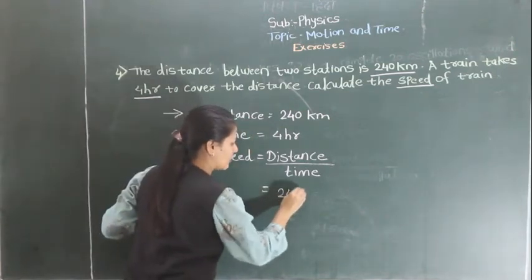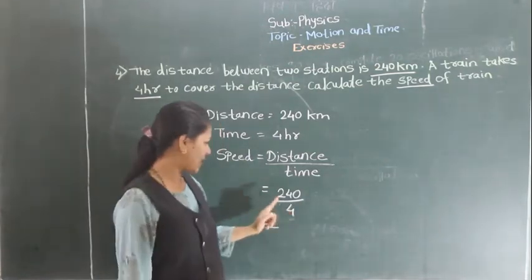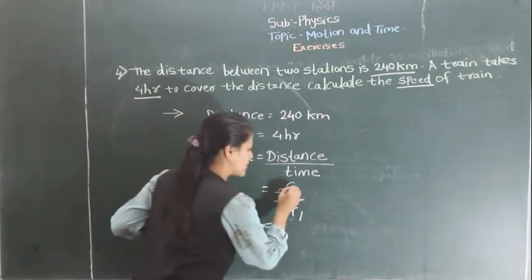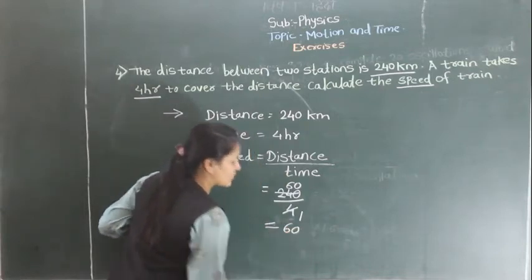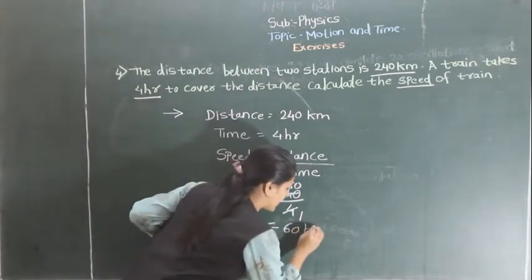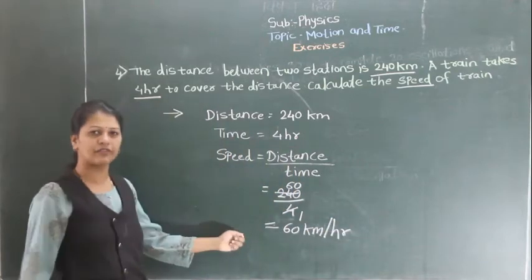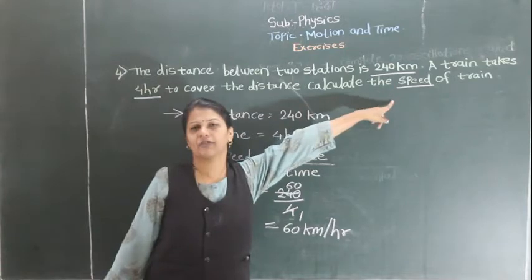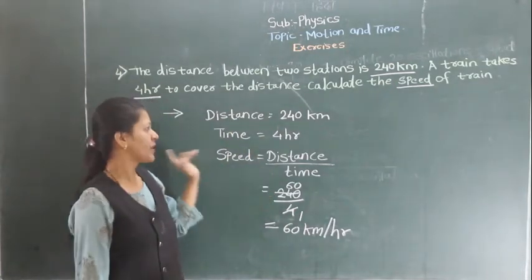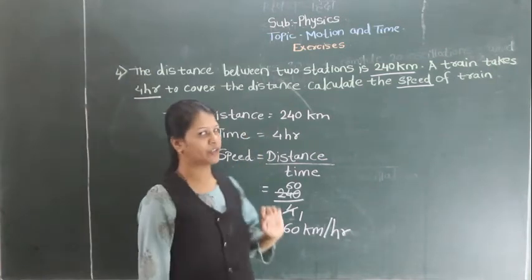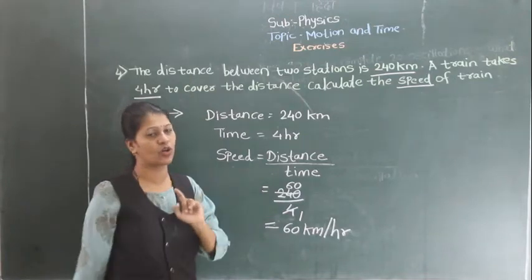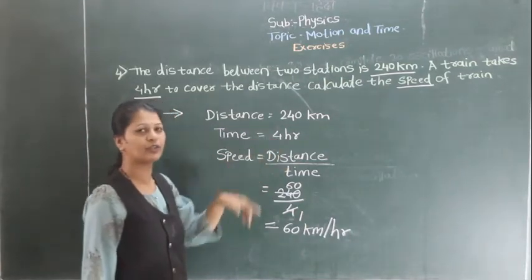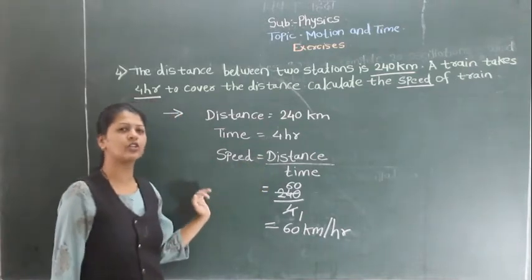Speed is nothing but distance upon time. So distance is 240 km and time is 4 hours. 240 divided by 4: 4 times 60 is 240, so the speed of the train is 60 km per hour. Have you understood this? You have to use the formula for speed. Speed is distance upon time. If the units were in minutes or seconds, you would need to convert them to hours first before solving.